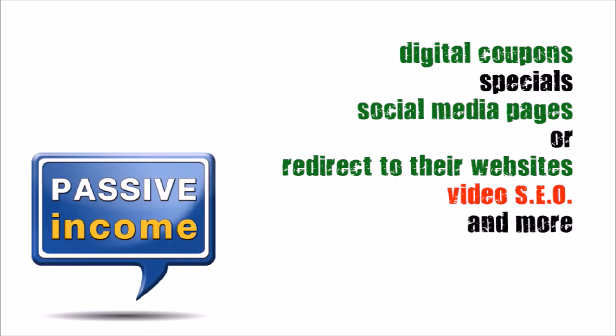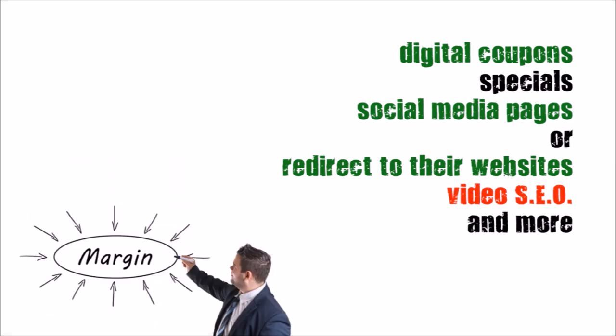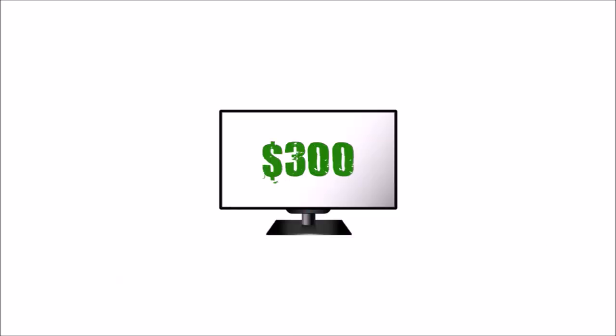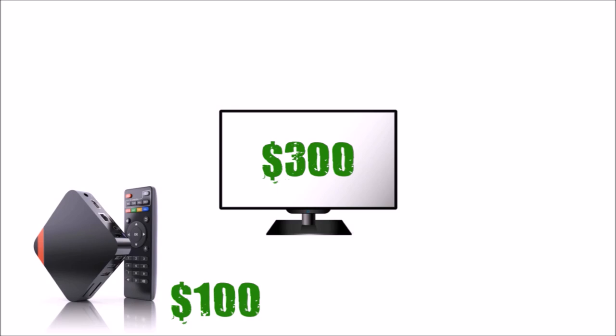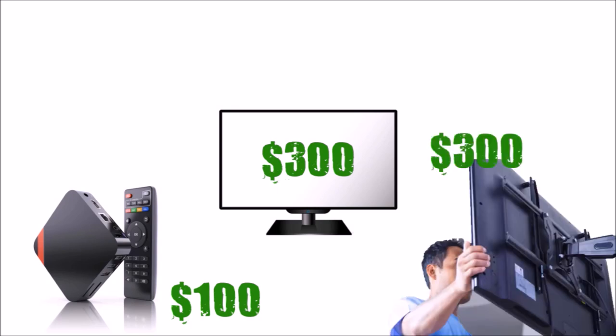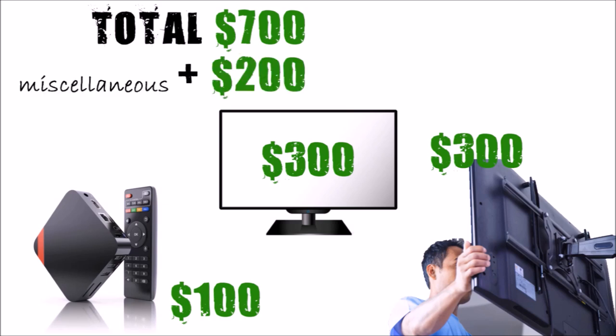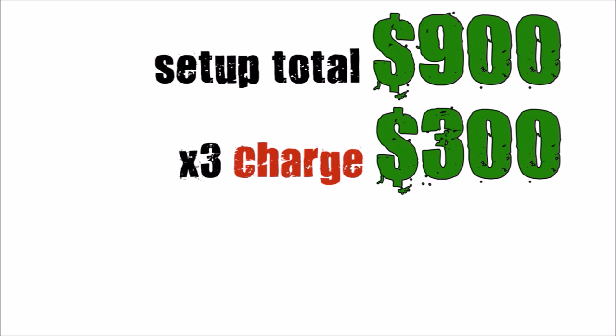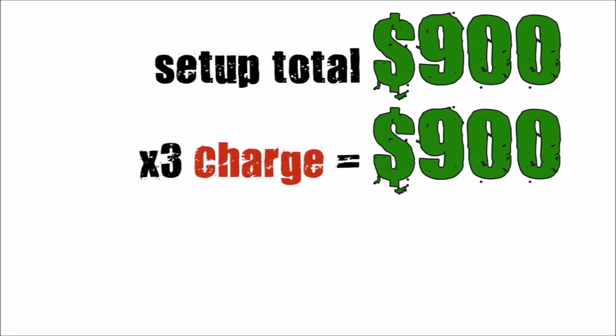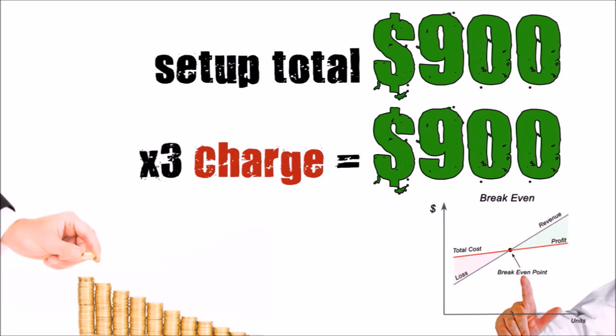Digital signage solutions have extremely high profit margins relative to investment if done correctly. You can start an ad screen ready for advertising with a TV costing $300, a $100 media player including software, and another $300 for a bracket and TV installer — totaling $700. Even if it costs you $900 to deploy an ad screen and you charge $300 yearly, just three ads would give you your entire investment back. You could find three investors who have businesses and ask them to front you $300 each in exchange for an ad spot.